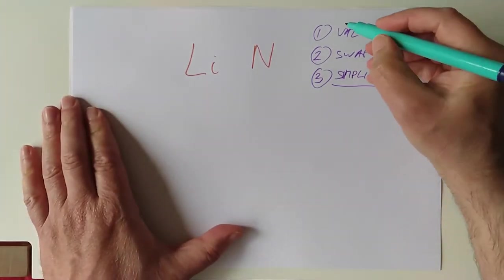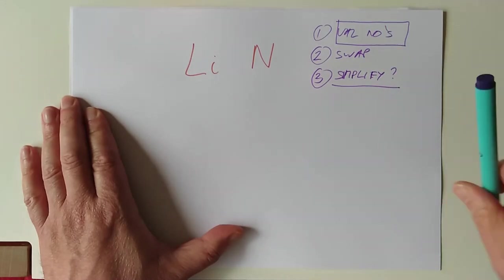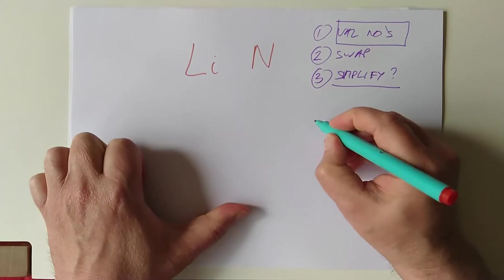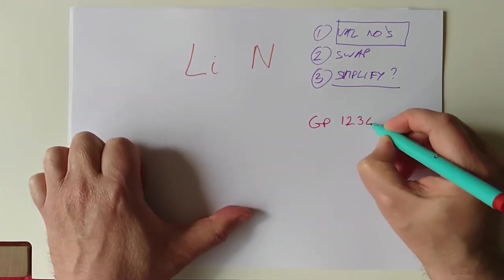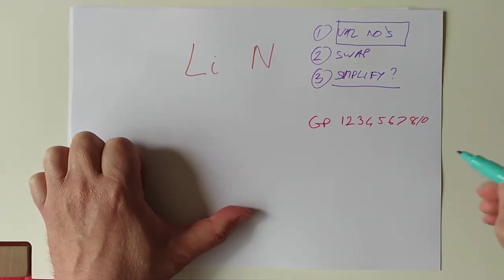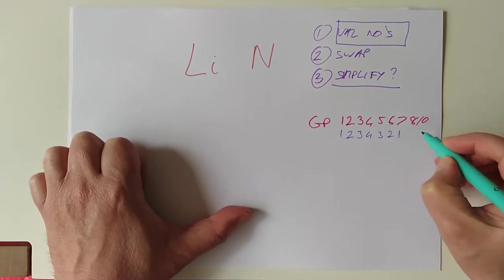Lithium. Where do we get these valency numbers from? This is what I would like to look at in more detail today. Now, you probably think it's a piece of cake. Where do we get the valency numbers from? You find the group number: 1, 2, 3, 4, 5, 6, 7, 8 or 0. And the valency numbers go 1, 2, 3, 4, 3, 2, 1, 0.